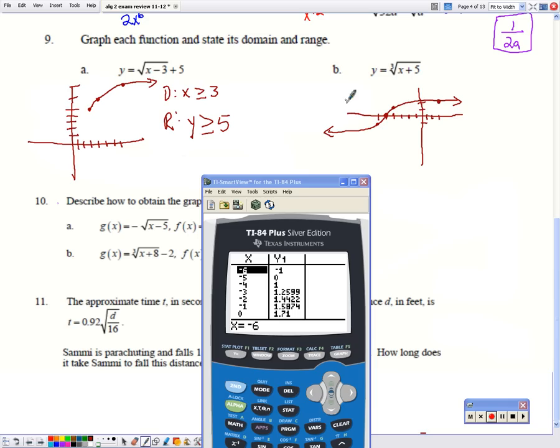And I can see that my graph, the domain, goes from left to right. It covers every point. So my domain is all real numbers. My range may be a little harder to see. It does cover everything up and down. It just goes really slow. So the range there is all real numbers.